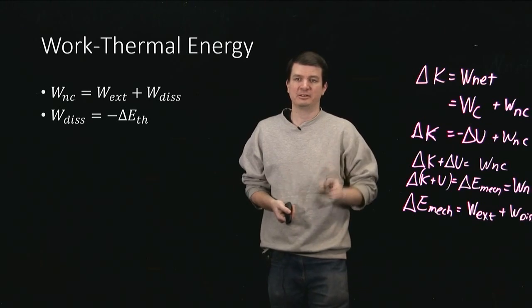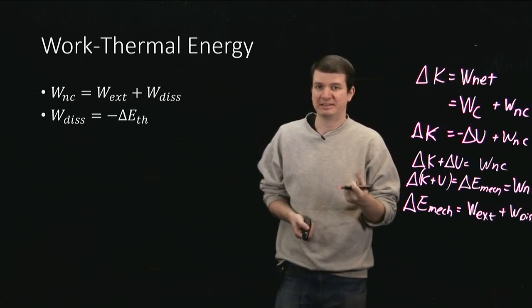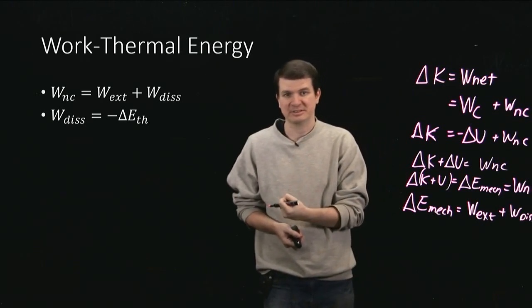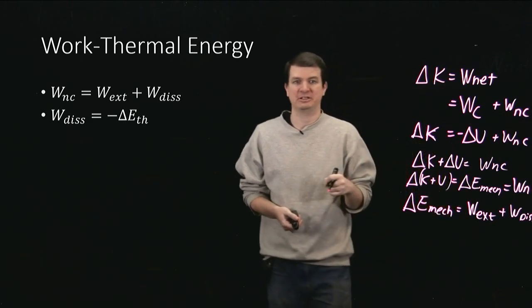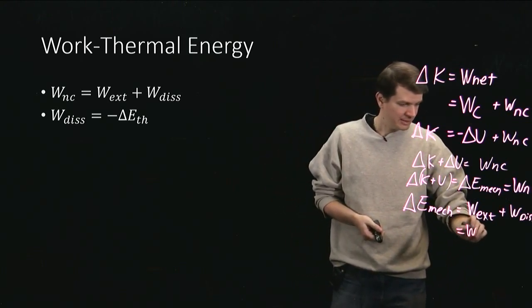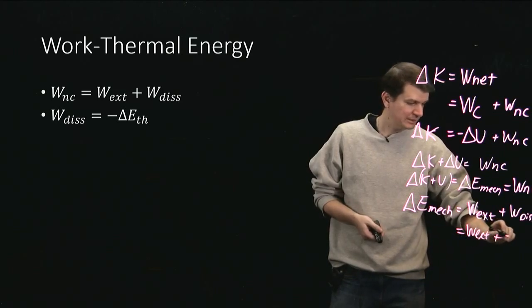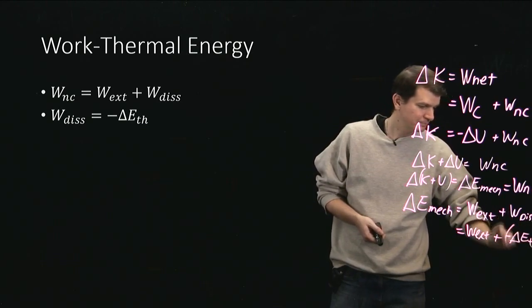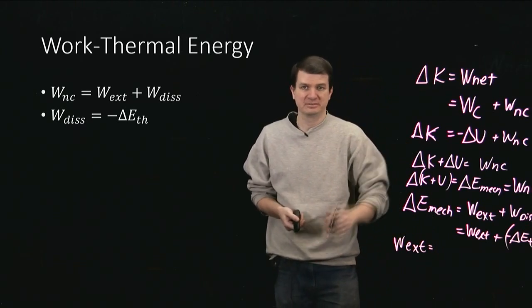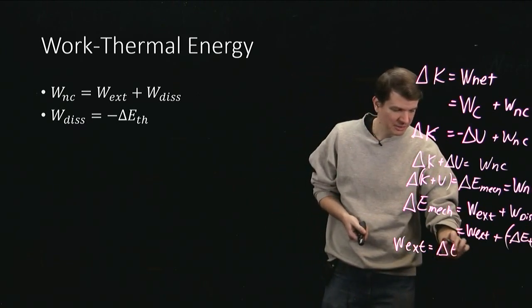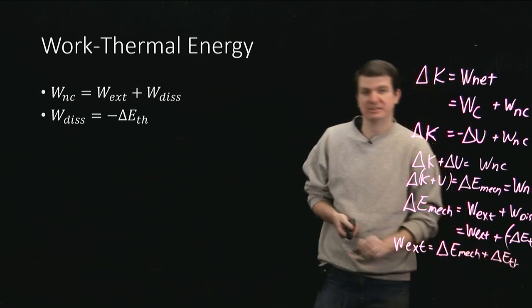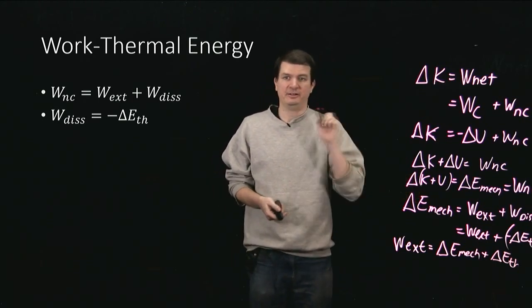The work done by the dissipative force is the negative of the change in thermal energy, because a dissipative force does negative work on the mechanical system while the temperature increases, representing higher thermal energy. So we can write this as the work by external forces plus the negative of the change in E_thermal. Bringing that to the other side, we can finally write: the work by external forces equals the change in mechanical energy plus the change in thermal energy of the system. And that right there is energy conservation.